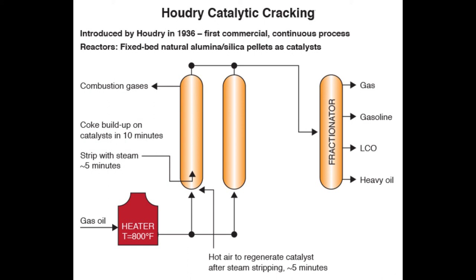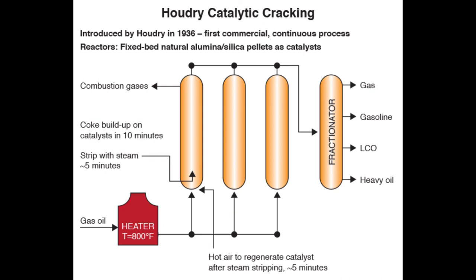The products are all sent to the fractionator. By the time the third reactor is coked up, you can switch the feed back to the first reactor. You will have had enough time to steam strip and decoke the first reactor, having these additional two reactors in the series.